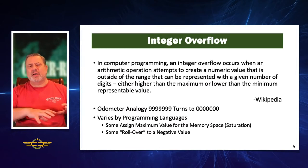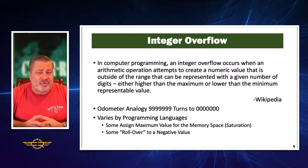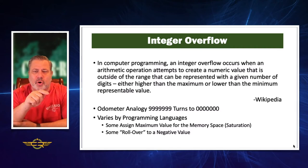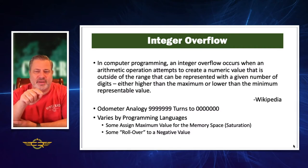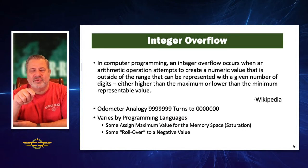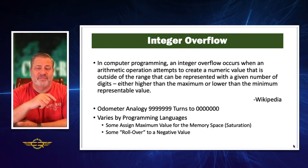Next we'll talk about integer overflow — we talked about buffer overflows before, but this is just a little bit different. In computer programming, an integer overflow occurs when an arithmetic operation attempts to create a numeric value that is outside the range that can be represented within a given number of digits, either higher than the maximum number or lower than the minimum representational value.